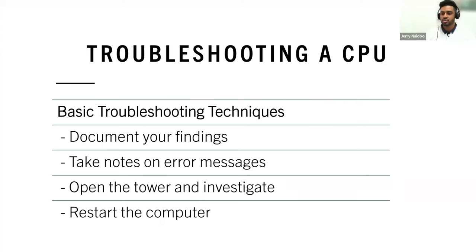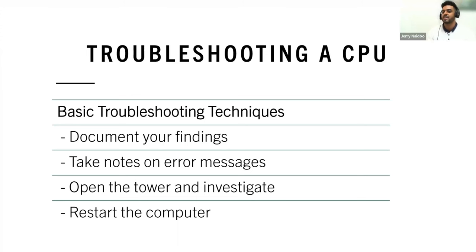Troubleshooting a CPU is a little more difficult than troubleshooting other devices in the system, mainly because CPUs aren't mechanical in nature — they don't have moving parts and they don't wear out with normal usage. You can usually run a CPU for a very long time if you take care of it. However, there are some factors that can cause a CPU to fail prematurely, and we're going to review some of those now.